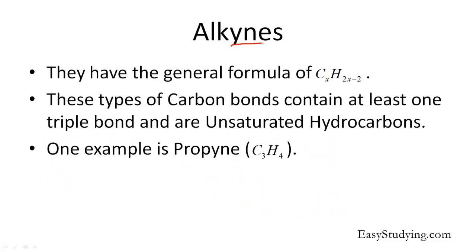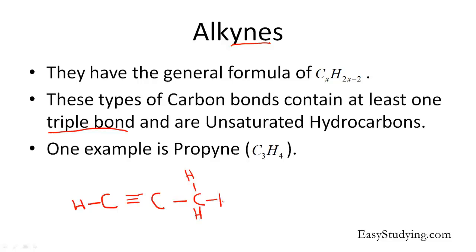Our last group is the alkynes. They have the general formula CxH(2x-2). So for every one carbon, we multiply by two and subtract two to get the number of hydrogens. These carbon compounds contain at least one triple bond and are also unsaturated hydrocarbons. One example is propyne, which is C3H4 — three carbon atoms and four hydrogen atoms. The structure is a carbon atom with a triple bond to another carbon atom, followed by a single-bonded carbon atom, with one hydrogen on the triple-bond end and three hydrogens on the last carbon.